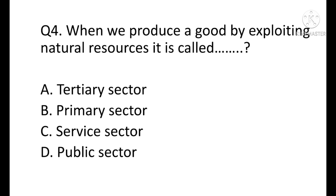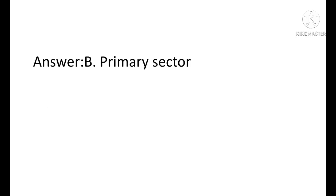Question 4: When we produce a good by exploiting natural resources, it is called — Option A: Tertiary. Option B: Primary. Option C: Service Sector. Option D: Public Sector. The correct answer is Option B — Primary Sector.